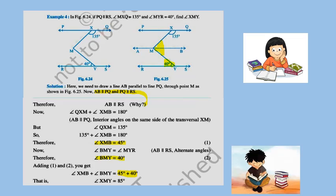Angle QXM plus angle XMB equals 180 degrees. This is because of interior angles on the same side of a transversal — they are supplementary, so their sum is 180 degrees. Since angle QXM is given as 135 degrees, substituting gives angle XMB equals 45 degrees, that is 180 minus 135.